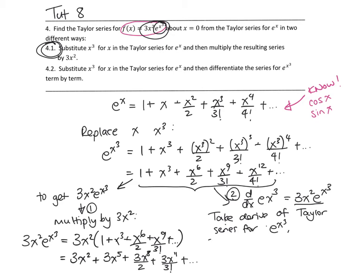So if we go ahead and do that, we get 3x²e^(x³) equals - taking the derivative of each term: derivative of 1 is 0, derivative of x³ is 3x², derivative of x⁶ is 6x⁵/2, the next term is 9x⁸/3!, and we carry on.